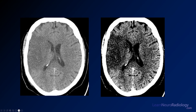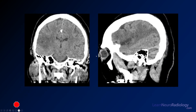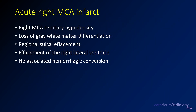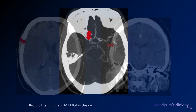Let's review the key CT findings. You can see the area of ischemia in the right MCA distribution. Windowing more harshly helps visualize the ischemia following a vascular territory, which is very important — it tells you you're looking at vascular pathology. There's a little effacement of the right lateral ventricle, indicating some swelling. On coronal and sagittal views, you again see loss of gray-white differentiation and areas of ischemia in the right MCA territory. Key findings: hypodensity, loss of gray-white differentiation, sulcal effacement, effacement of the right lateral ventricle, and no hemorrhagic conversion.